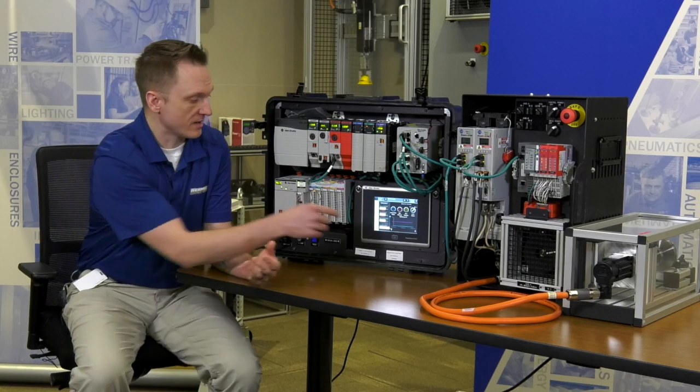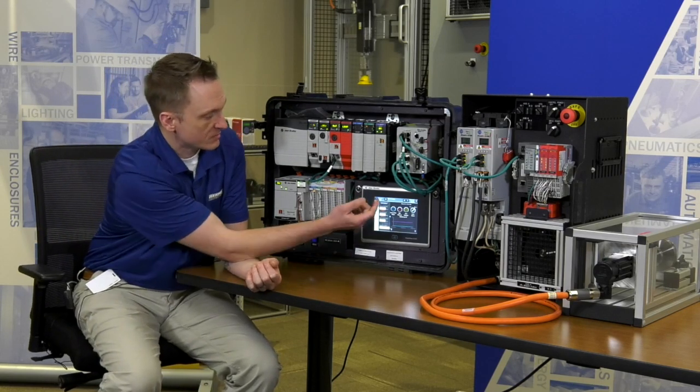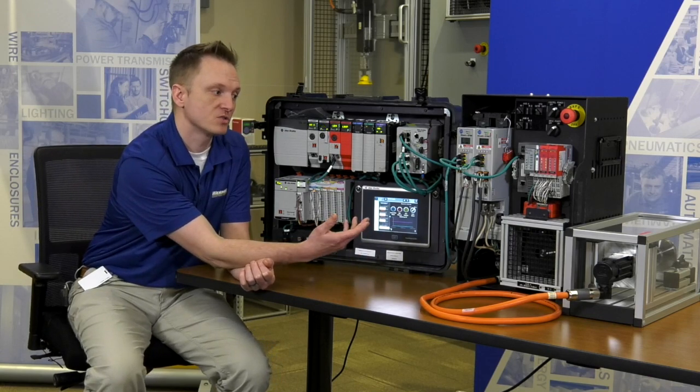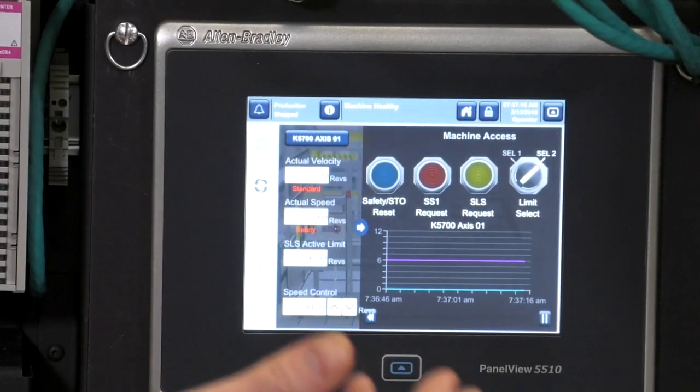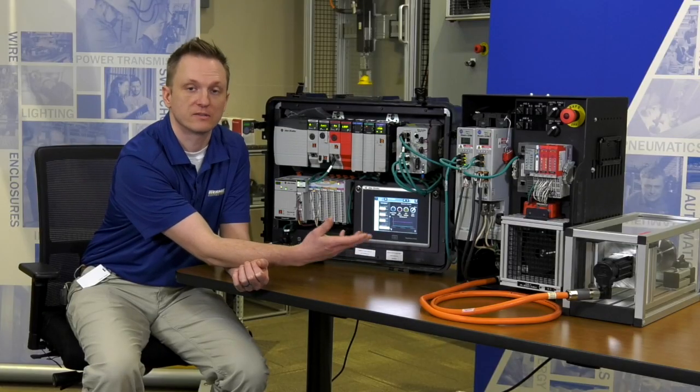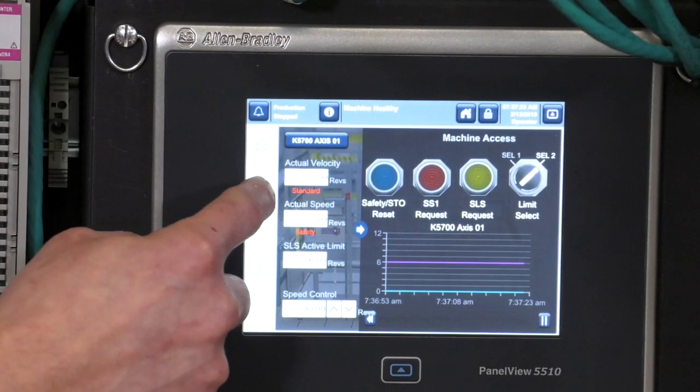So the first thing I'm going to do is on the PanelView 5510, I'm just going to get the drive ready to go and I'm going to initiate some motion. Once I get the motion ready, I'm going to initiate a Safe Stop 1 request, which is going to be a ramped deceleration to a stop, and then issue a Safe Torque Off. So I'm going to start the motor up.